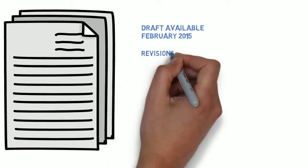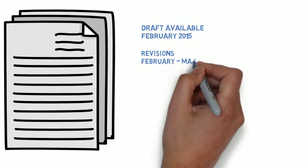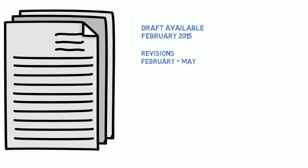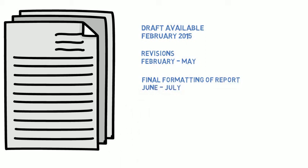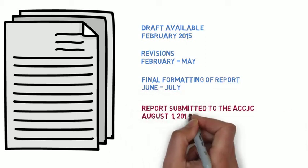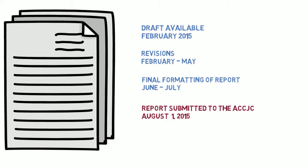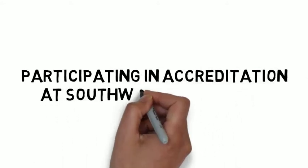Revisions to the full draft of the self-evaluation report will be completed from February through May. In June and July, the final formatting of the report will be completed. The final report will be submitted to the ACCJC on August 1st, 2015.